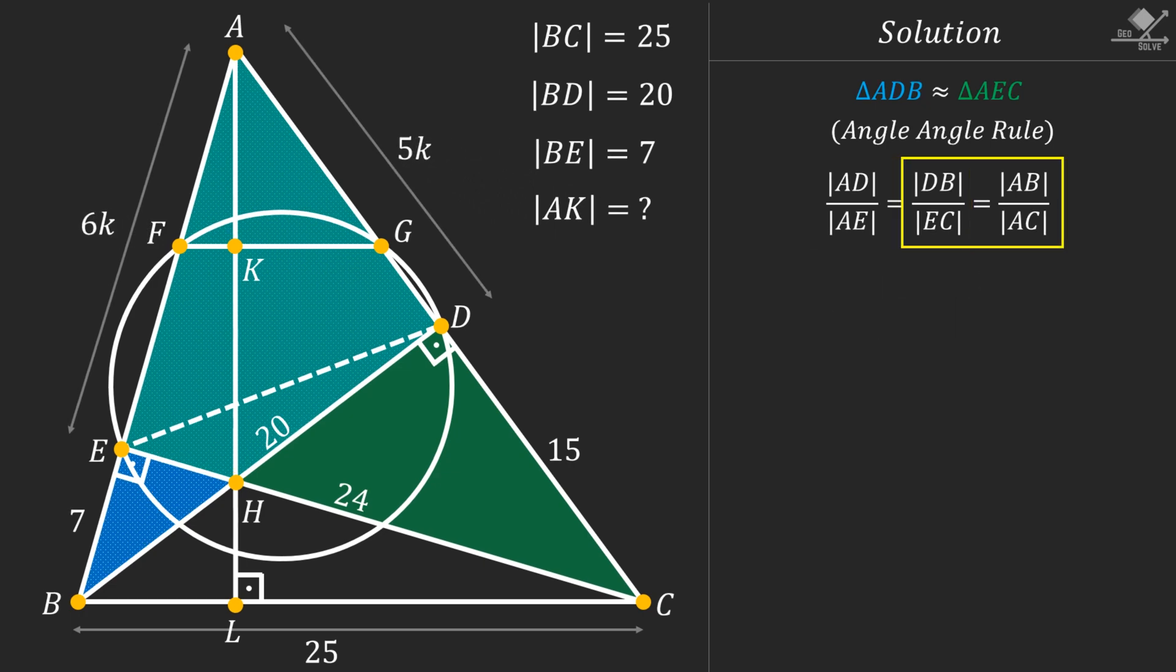Now let's use the second part of the similarity equation. We know the DB over EC ratio is 5 over 6. Instead of AB we can write 7 plus 6k, and instead of side AC we can write 15 plus 5k. Let's solve this equation to find the value of k. After cross multiplying and simplifying we will have 33 equals 11k. From here k will be equal to 3. So since side AE is 6k units it will be 18 units. Similarly side AD is 5k units so it will be 15 units.